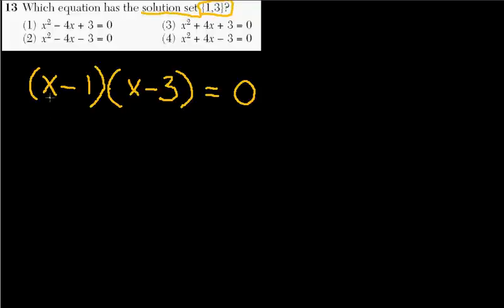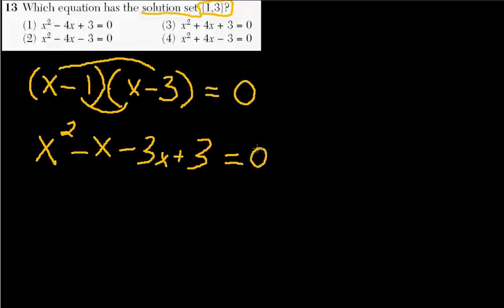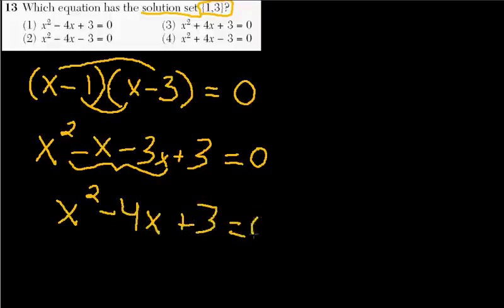Well, now we just do FOIL on this. So, x times x is x squared. I'm going to do negative x here. Then I'll do negative 3x up there. And then I'll take negative 1 times negative 3. Remember, a negative times a negative is a positive 3 equals 0.